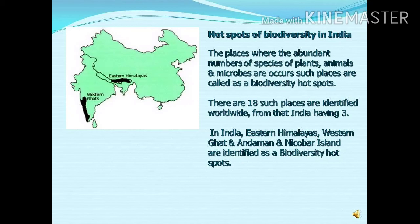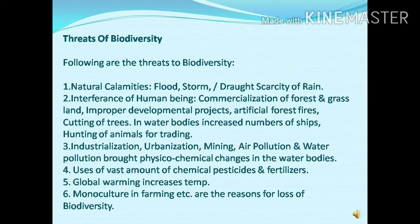Some areas of India are recognized as hotspots of biodiversity: the Eastern Ghats, Western Ghats, and Andaman and Nicobar region. These are small regions but they are very rich in number of species as considered for biodiversity, and that is why they are considered hotspots of biodiversity.